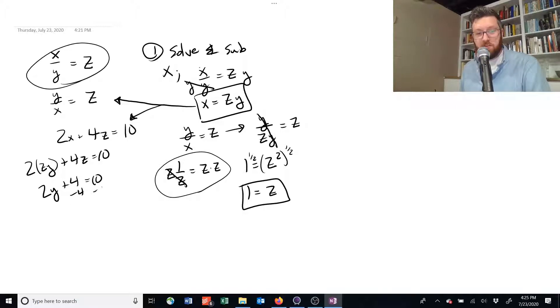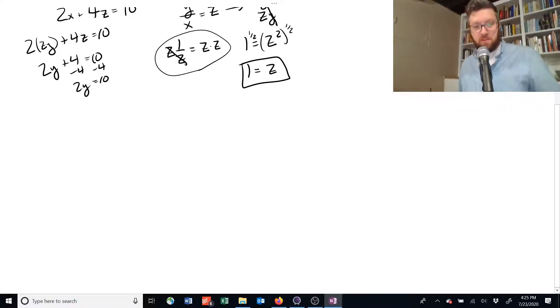And we can subtract 4 from each side, and we get 2y is equal to 10. And let's scroll up a little bit here. We should find that y is equal to 5 in this case. I'm sorry, this should be a 6 when you subtract 4 from both sides. So if we divide by 2, we get y equals 3.